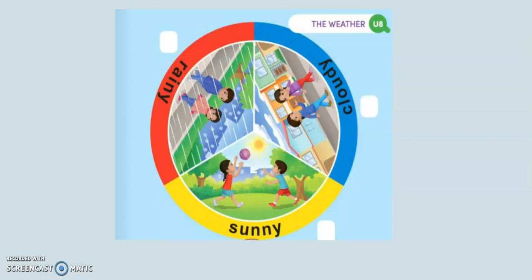Number three: it's a rainy day. Number three: it's a rainy day. One more time. Listen carefully and write a number. Number one: it's a sunny day. Number two: it's a cloudy day. Number three: it's a rainy day. One more time. Number one: it's a sunny day. Number two: it's a cloudy day. Number three: it's a rainy day.